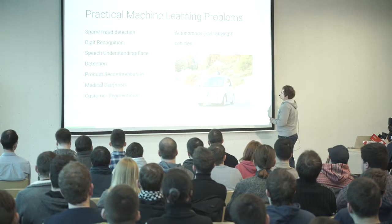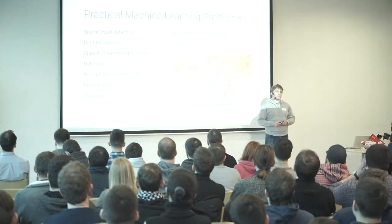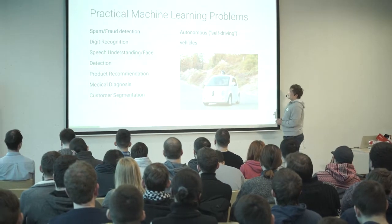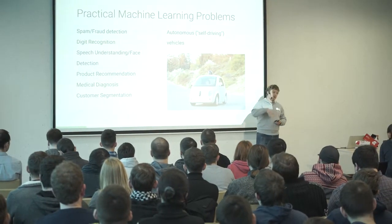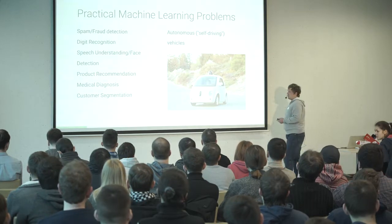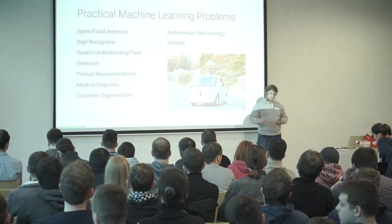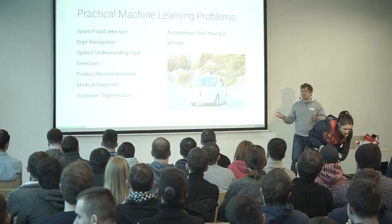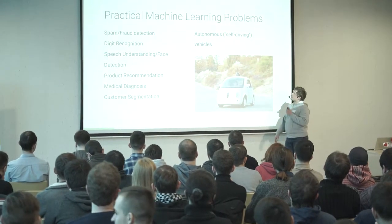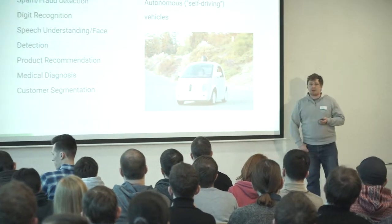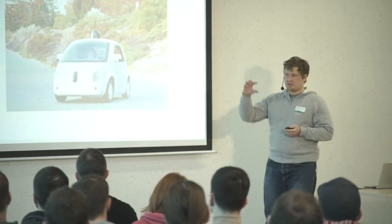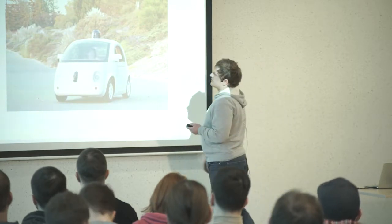Practical machine learning problems: first is spam and fraud detection. I think everyone knows SpamAssassin, which uses basic categorization for spam detection. It's supervised learning — you teach it 'this is a spam email, this one is not,' and it automatically classifies everything. Fraud detection is also very important. If you have a big billing system, you'll have a huge amount of fraudulent transactions. Machine learning can provide information on how to detect patterns of fraud transactions and reject them.